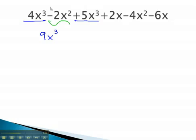Next, there's a negative 2x². Notice the negative stays with the number. The other x², the like term, is negative 4x².